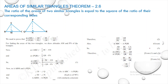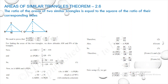From equation 3, AB/PQ is also equal to BC/QR. Substituting this, we get area of ABC divided by area of PQR equals BC/QR whole square. Similarly, this holds for the other corresponding sides as well. Thus the theorem is proved.